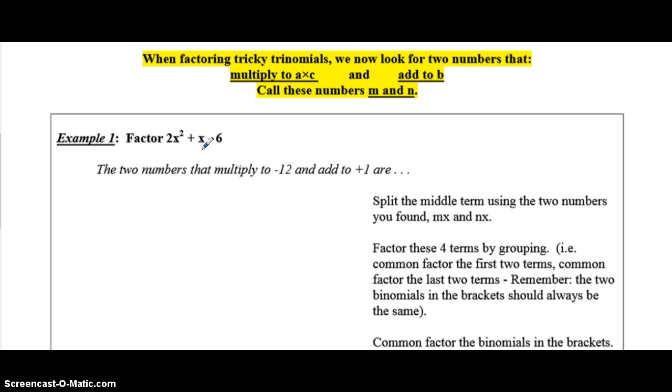We factor tricky trinomials very differently than we factor simple trinomials. So, make sure you're taking notes. We are no longer looking for two numbers that multiply to give you negative 6. What you're going to do is take the a value and the c value and multiply them together, just like it says here. So, we need two numbers that multiply to give us negative 12 and add to give us b. So, in this case, b is equal to 1. So, they have to add to give us b and multiply to give us what a times c is equal to.